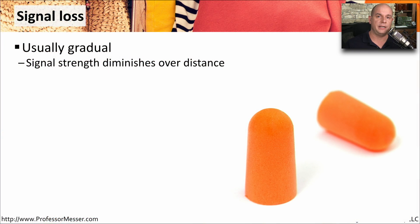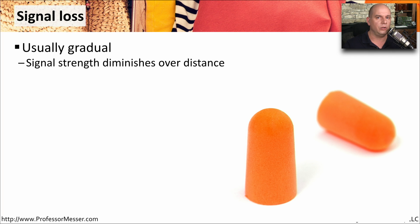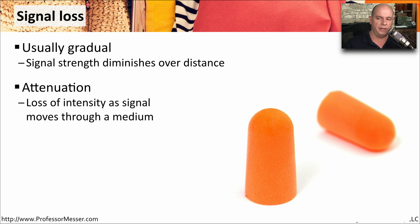If our network doesn't have a signal, then we're not going to have any data go over that connection. So it's important to understand how signal loss might affect the communication between one end of the network and the other. Signal loss is usually a gradual loss — as you're going a longer distance, the signal begins to degrade. We call this degrading of the signal attenuation.